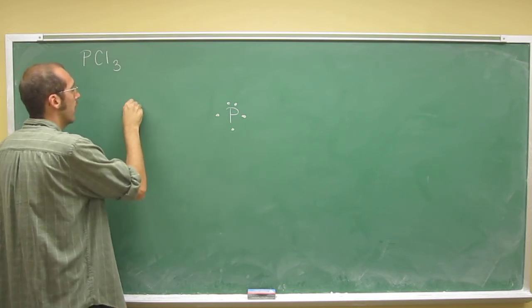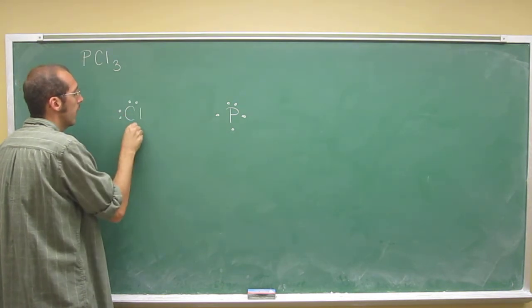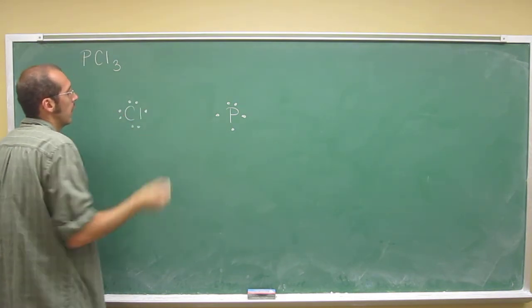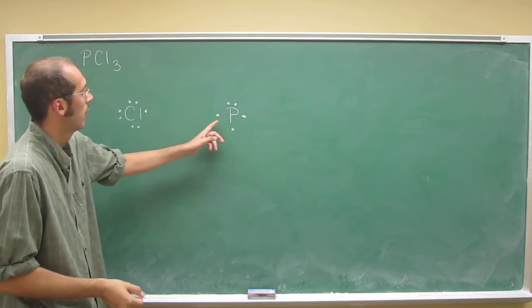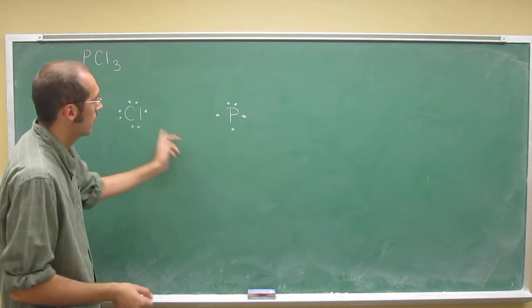So chlorine has the seven valence electrons. And again, I'm just going to put the one electron on the side of the phosphorus atom.